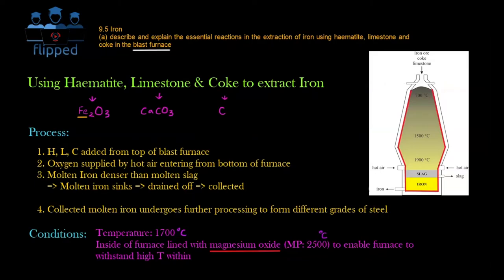Hello, welcome to Flipped. Today we are on the chapter of iron, and we are talking about blast furnace process. In the blast furnace, it's where we can get our molten iron, which is what we want at the final reaction. So how do we do this?